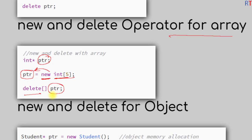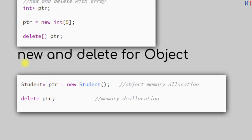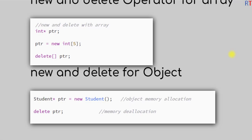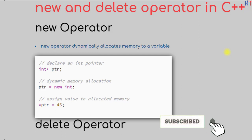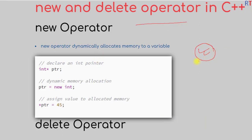The new and delete operators can also be used for objects. We use the new operator to dynamically allocate memory for an object, and the returned reference is stored in a class-type pointer. We then use the delete operator to deallocate that memory. Hope you understand the concept of new and delete operators in C++ programming — we'll see you in the next one, thank you.